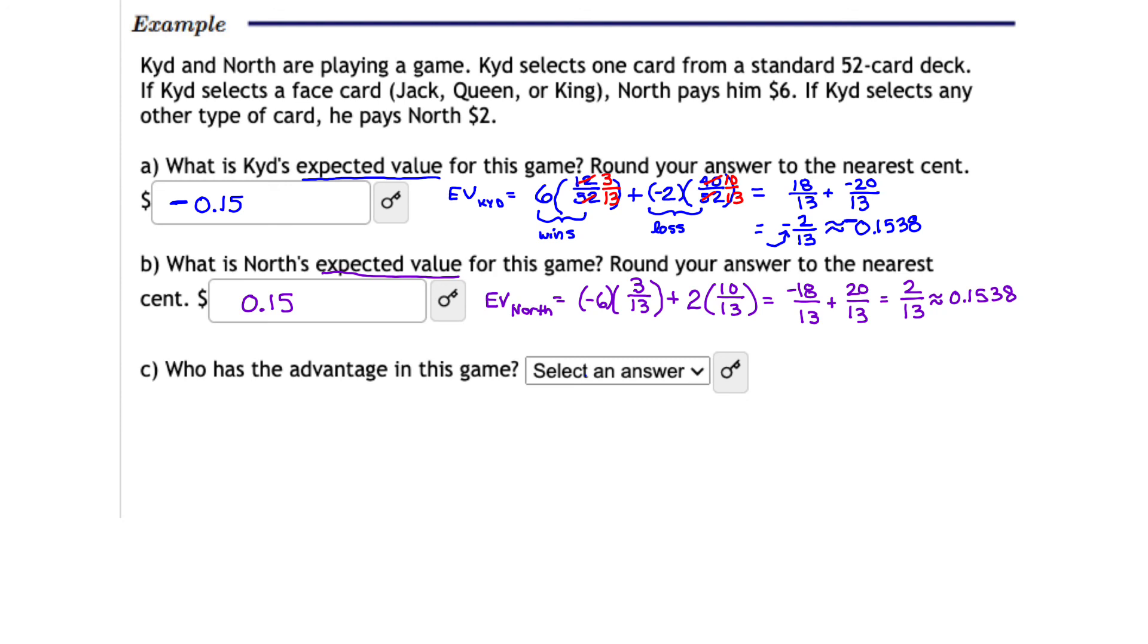Now, who has an advantage in the game? Well, that's clear, right? The person that has the advantage is the one that has the better or a higher expected value. So that means in this game, we would say that North has the higher or better expected value. And so North clearly has the advantage in the game.